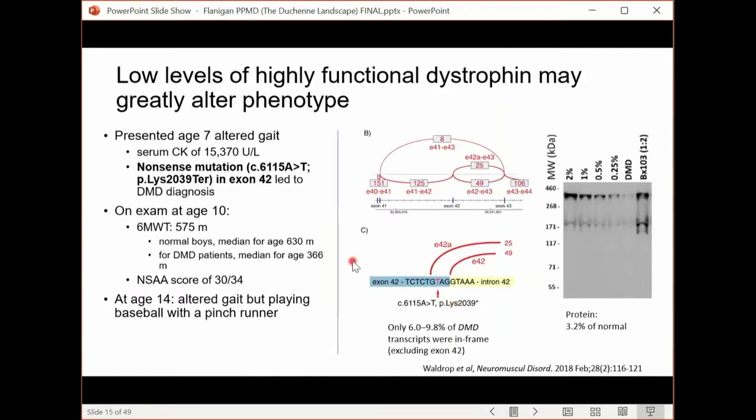One other thing about muscle biopsy: it's important to know that low levels of dystrophin can still greatly alter the phenotype, the clinical features. There's a seven-year-old boy who presented to the clinic with a diagnosis of DMD because his mutation report said that he had a nonsense mutation in exon 42. And it turns out that if you exclude exon 42, you maintain an open reading frame. When we saw him around age 10, he actually did much better than most boys with Duchenne at that age. At age 14, he could still play baseball. He batted. He couldn't run well, so he had a pinch runner, but he played baseball.